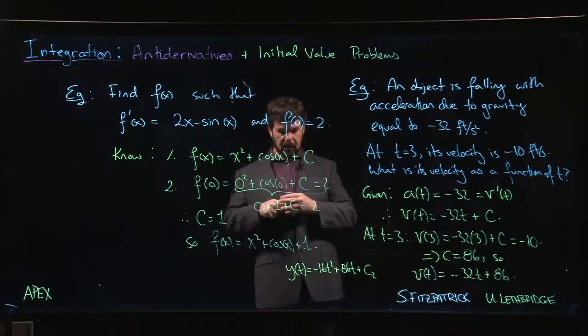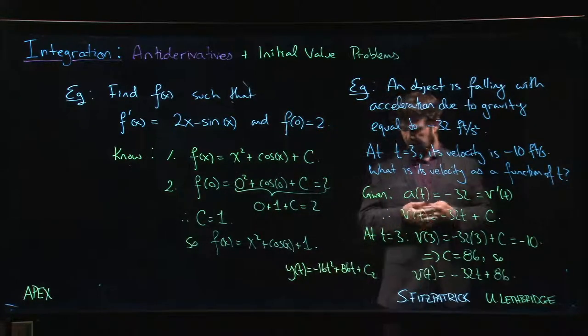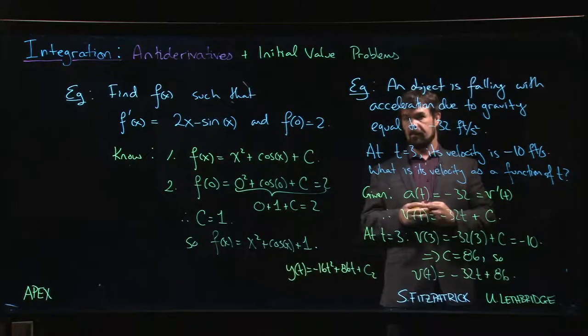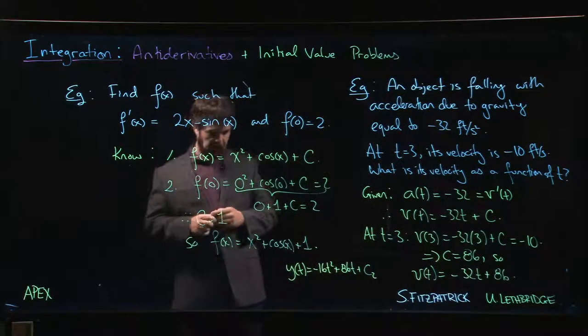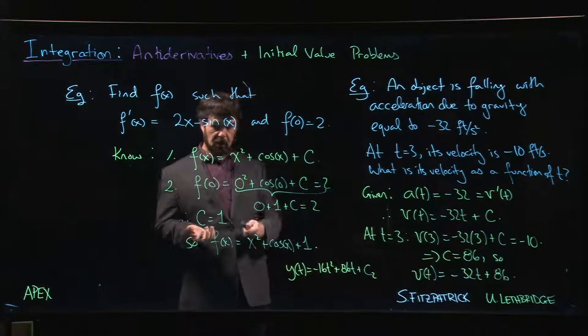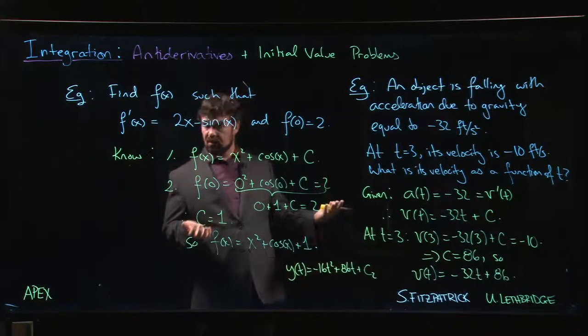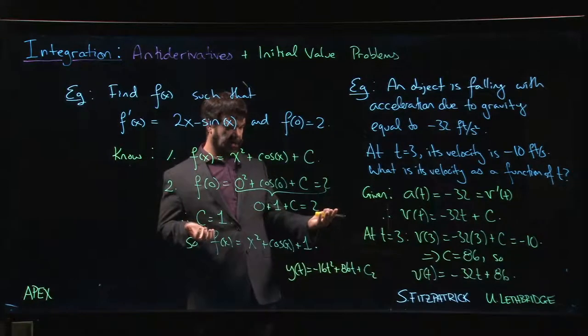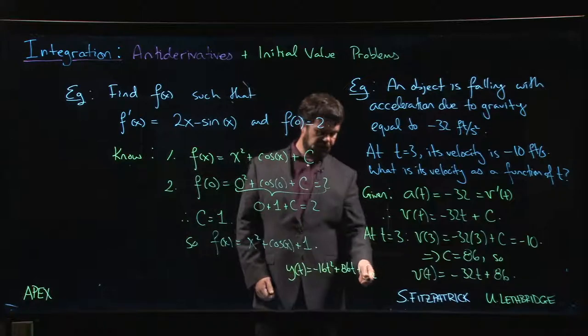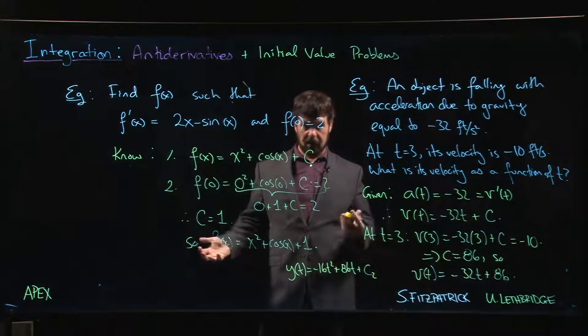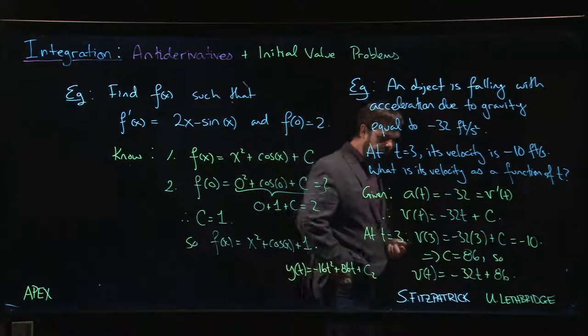Now if I knew the position at some particular point in time, I would be able to get you information on the position for all time. But again, there's this undetermined constant that I would need to know. If somebody told me that when t was equal to zero the object started at a height of 50 feet, well then I know that C2 has to be 50, and now I have y as a function of t for any t.